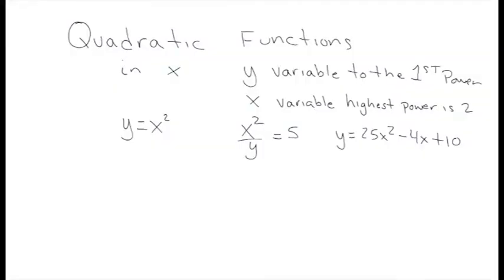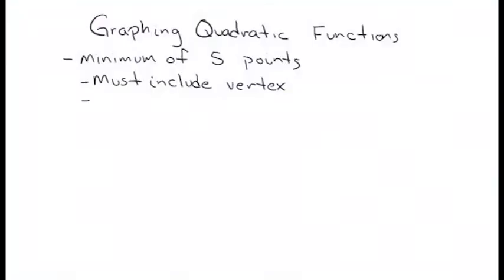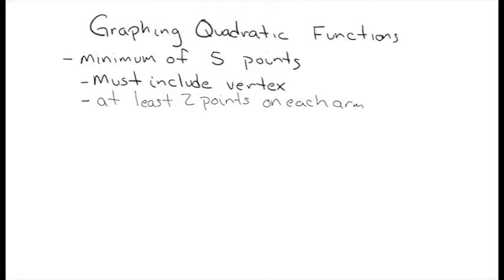For graphing quadratic functions, you need a minimum of five points. You must include the vertex, and you have to give me at least two points on each arm. You can graph two points on the right-hand arm, then use the axis of symmetry to find the two corresponding points on the left-hand arm. Always include the vertex and at least two points on each arm.